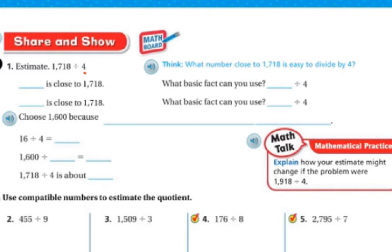Well, I know a basic fact is, I know 16, I know 4 can go into 16 evenly. So if I did 1600 and 1600 is close to 178. And then I also know that 4 can go into 20.